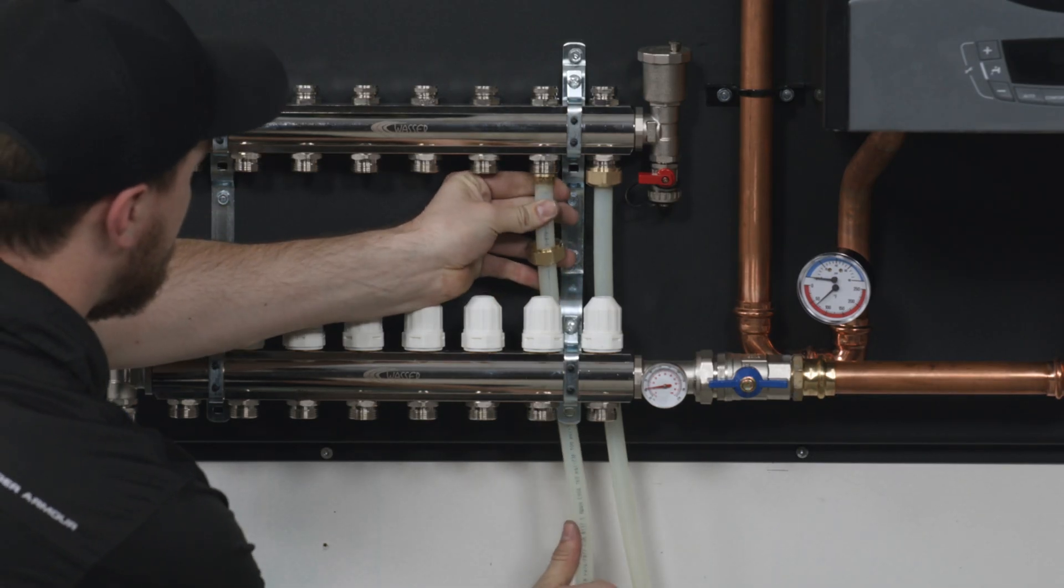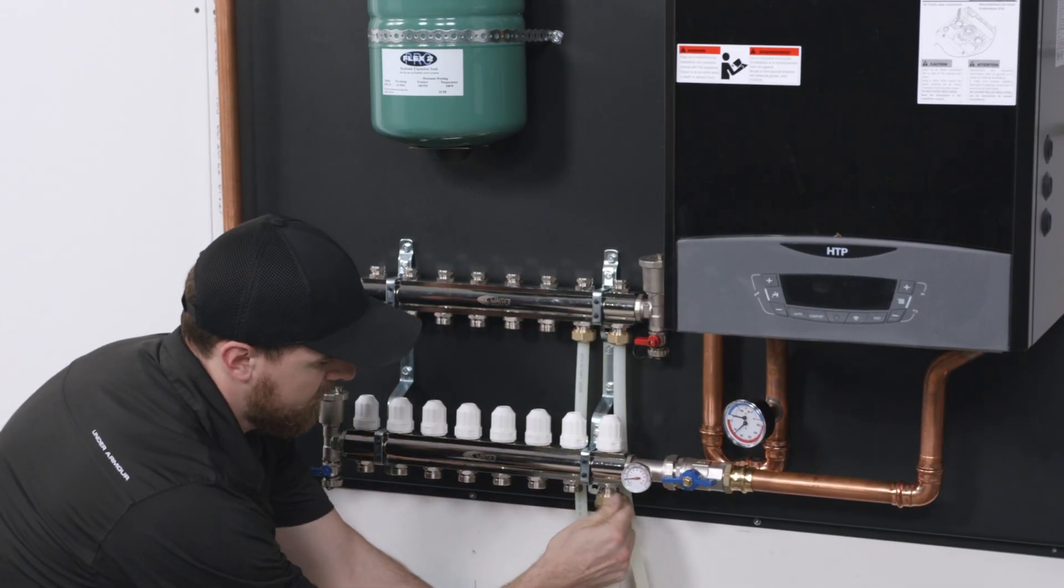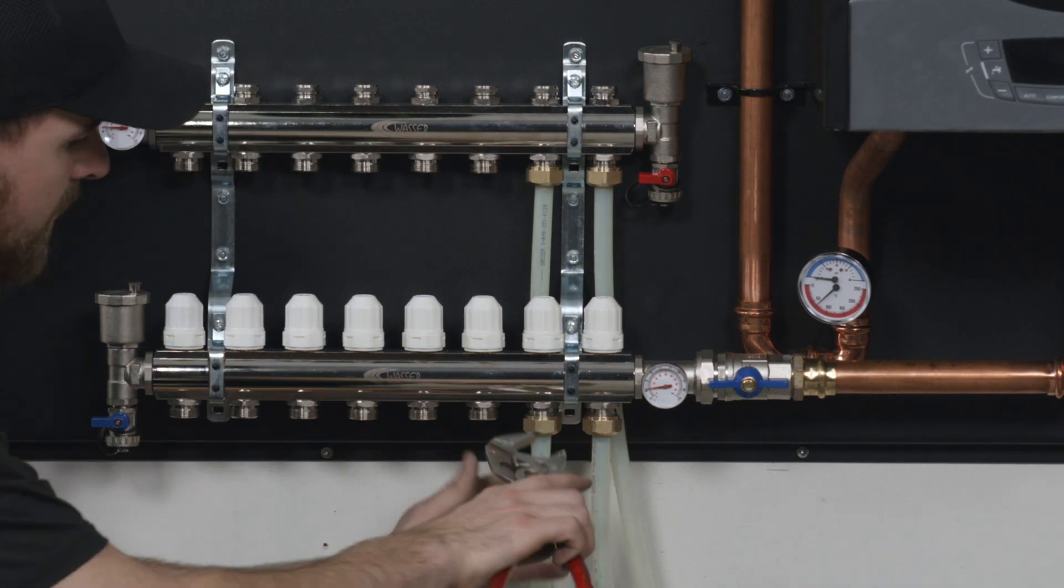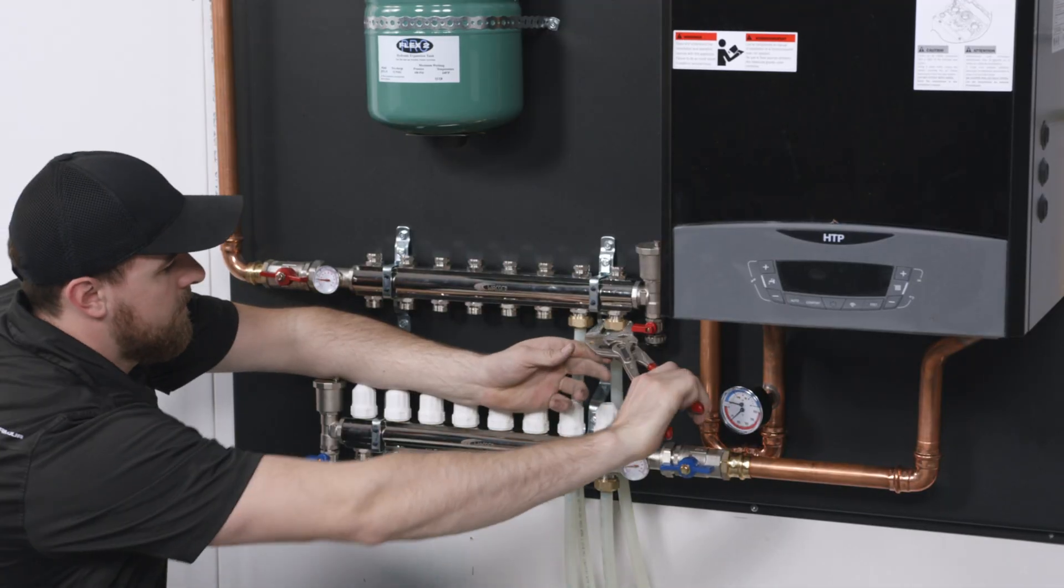Repeat for all supply and return pipes. Snug the manifold adapter nut with a wrench, but be careful to not over-tighten.